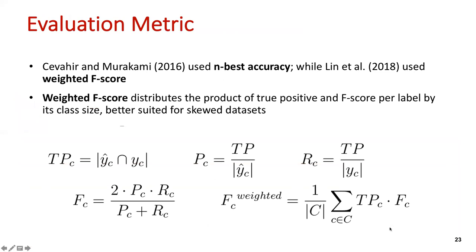Cavigier and Murakame use N-best accuracy as the evaluation metric, while Luong et al. use the rated S-score. Following Luong et al., we use the rated S-score, which distributes the product of true positives and S-score per label by class size. It is better suited for SKU datasets like those used in our experiment.